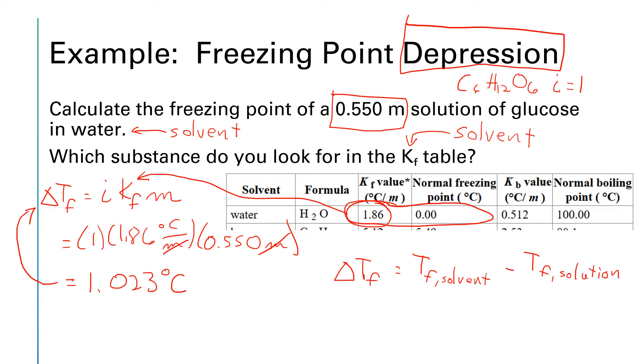We now have a number for delta T sub f. Delta T sub f is 1.023. The freezing point T sub f of the solvent is 0 because pure water freezes at 0, and then minus T sub f of our solution.